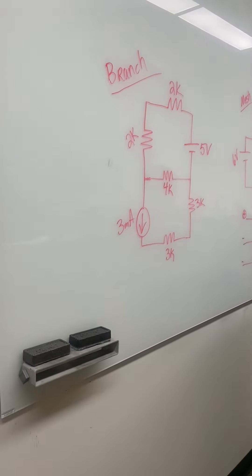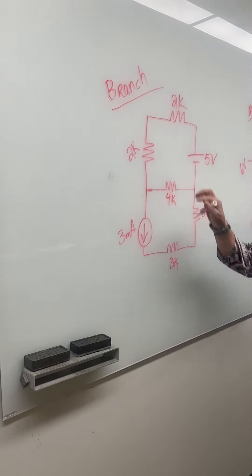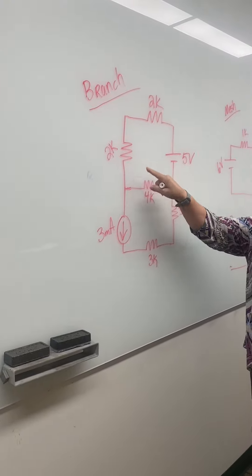Okay, so this is a branch analysis. How many unknowns? We have these two, that's an unknown, and this one.